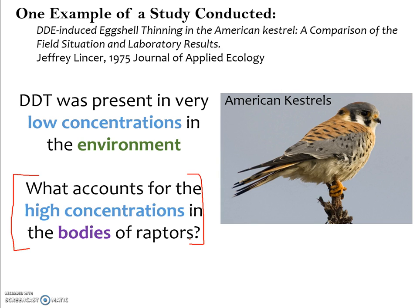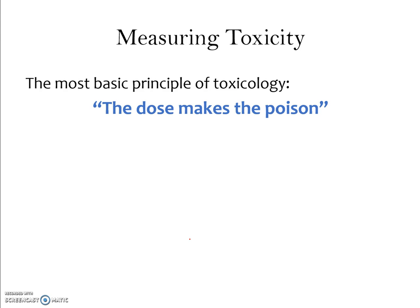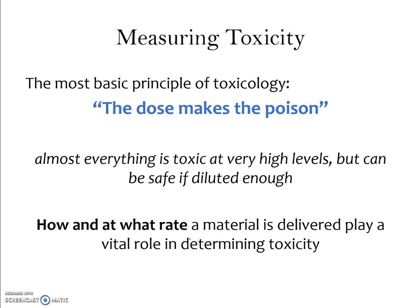The last topic is how we measure toxicity. A basic principle of toxicology is that the dose makes the poison — almost everything is toxic at high levels but could be safe if sufficiently diluted. How something is administered and at what rate also matter: is it absorbed through skin, ingested, or breathed in? Is it all at once or over a lifetime? There are many variables in determining whether something is toxic.